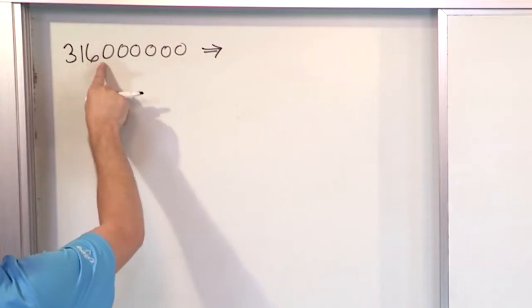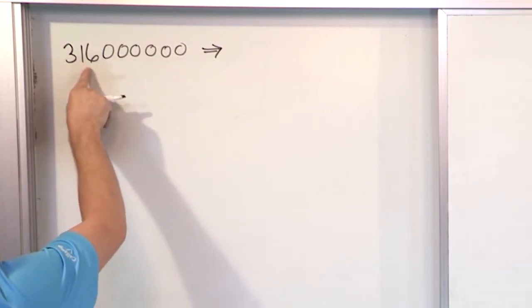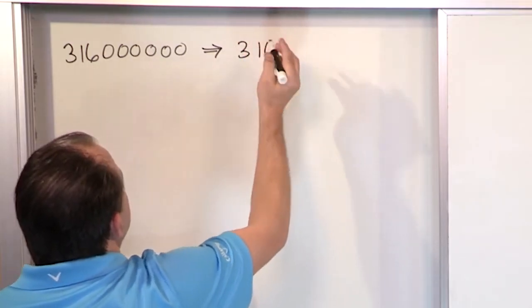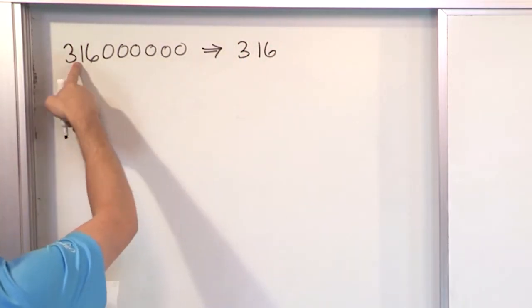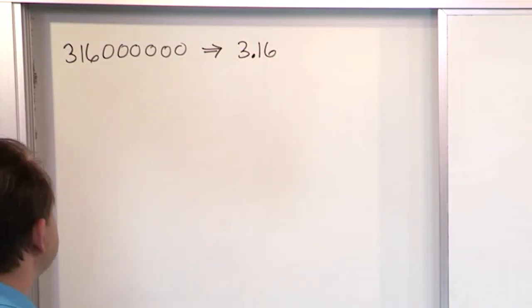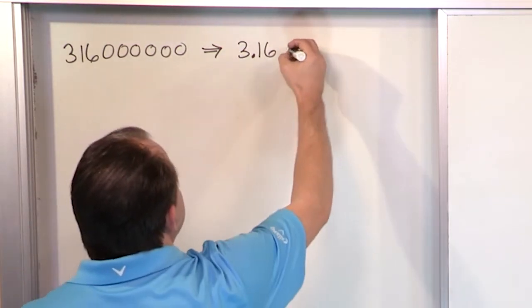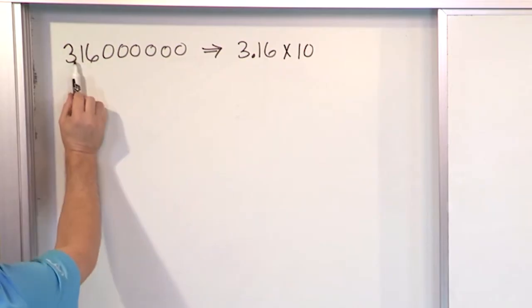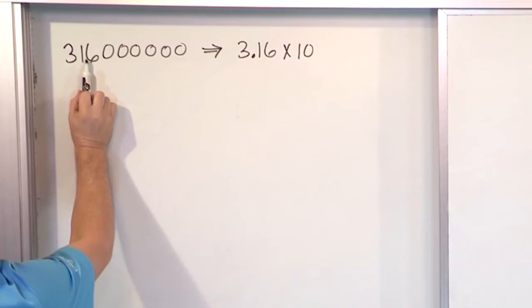The first thing you do is you write the numbers. The zeros don't matter. Just write the actual non-zero numbers down. So we write down 316, but what you do is you stick a decimal point right after the first number. So we always put the decimal after the first non-zero number there. So 3.16. And then we write it down like this, times 10, and how do you figure out the rest? Well, if the decimal is here, right after the three, then you just count as you move your pencil.